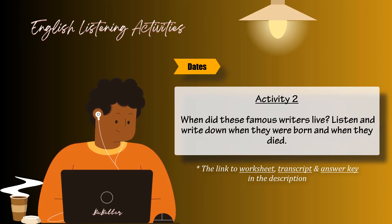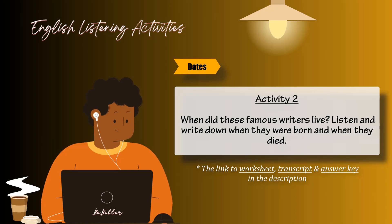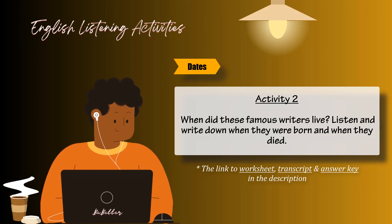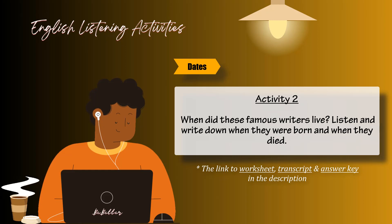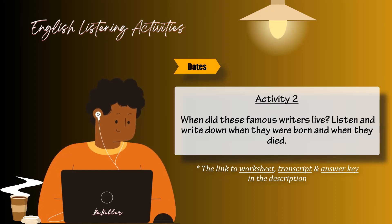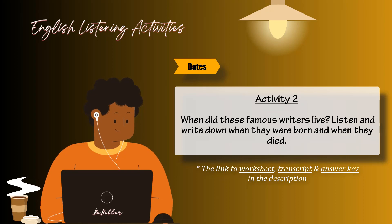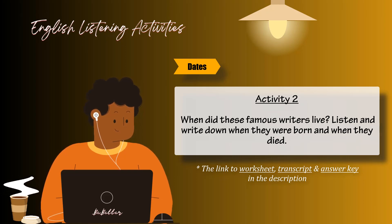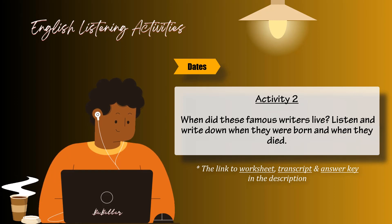Activity two. When did these famous writers live? Listen and write down when they were born and when they died. One. When did Charles Dickens live? He was born in eighteen twelve and he died in eighteen seventy.